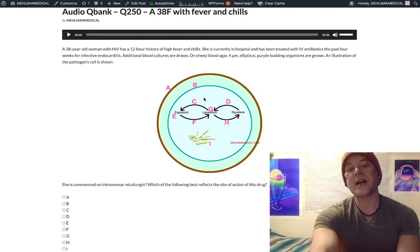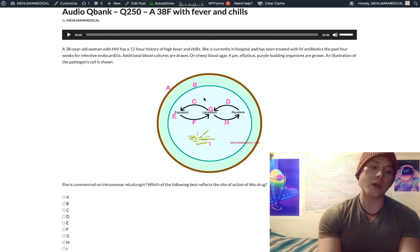And itraconazole is classic for sporothrix schenckii. Our rose thorn, sporotrichosis, it can ascend as lymphocutaneous sporotrichosis. That's going to be oral itraconazole. Voriconazole used for invasive infections, similar to caspofungin, micafungin, or amphotericin B. But voriconazole can cause arrhythmia.